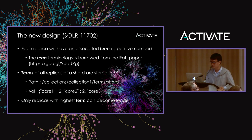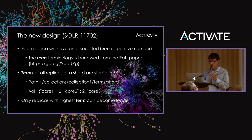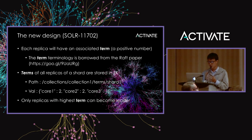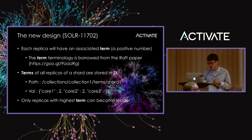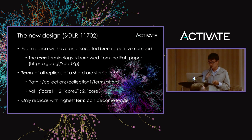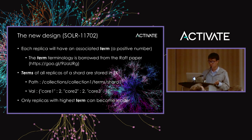In the new design, each replica has an associated term value — basically a positive number. Terms for all replicas of a shard are stored in a ZooKeeper node. For example, all term values for replicas of shard1 of collection1 are stored at the path: /collection/collection1/term/shard1. The value is stored as JSON where the key is the replica name and the value is the term number.